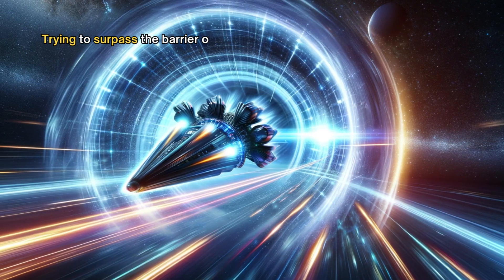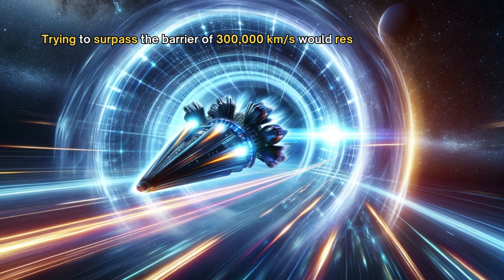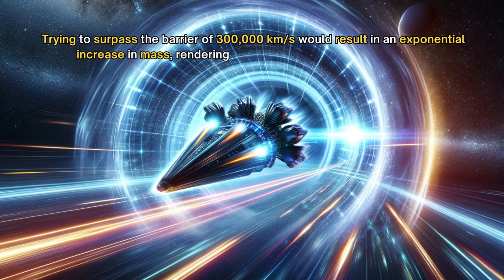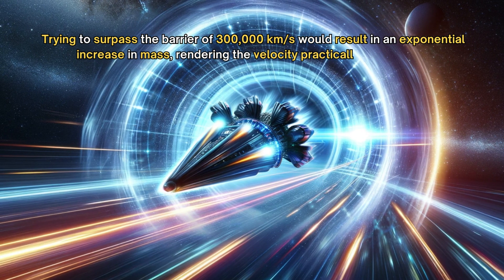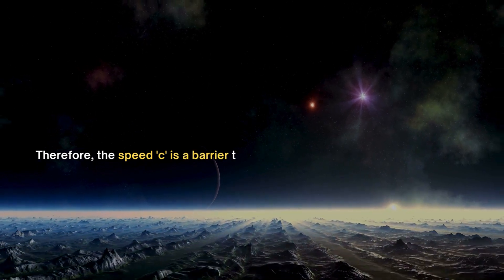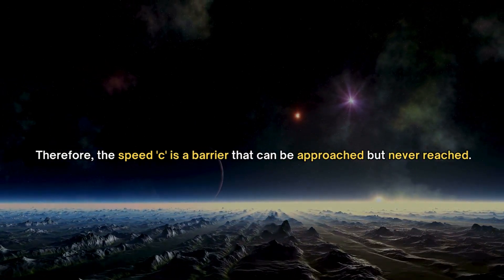Trying to surpass the barrier of 300,000 km per second would result in an exponential increase in mass, rendering the velocity practically unchanged. Therefore, the speed C is a barrier that can be approached but never reached.